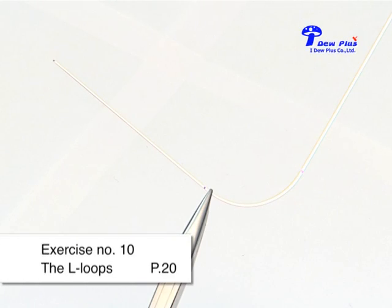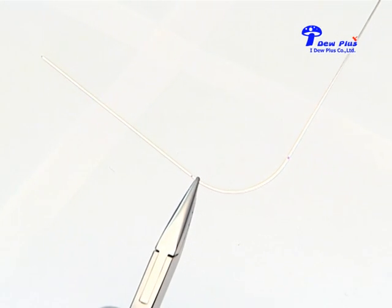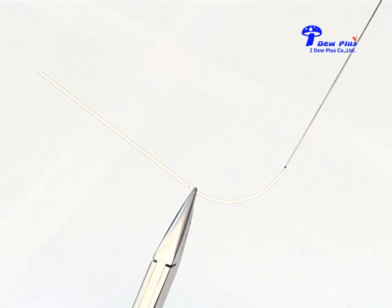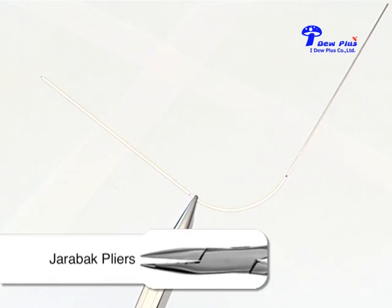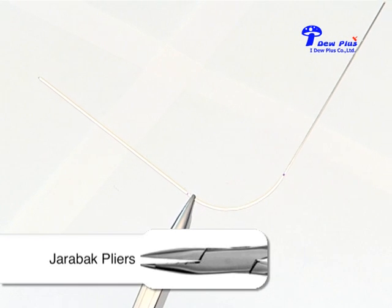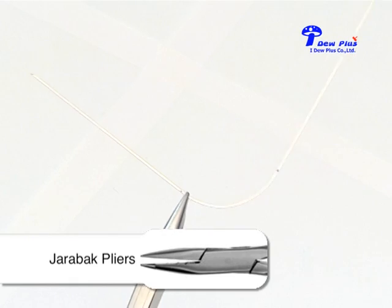The next loop we use is the leveling loop. Exercise number 10, the L loop. The wire selection is 16-22 for demonstration purposes. We can use the L loop as a leveling loop or an intrusion step by adding two L loops at points 2A and 2B, as shown here.